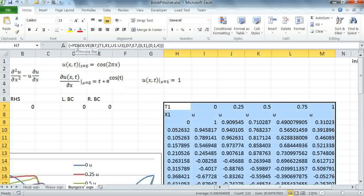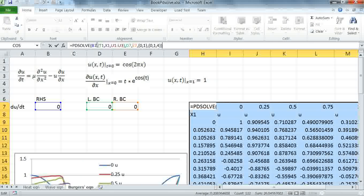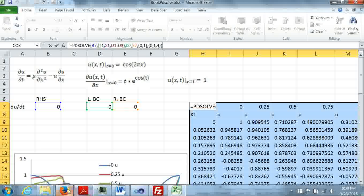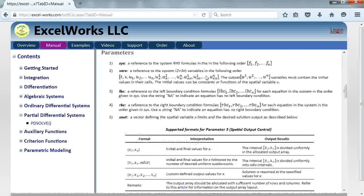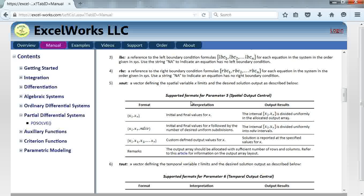I entered my PD solve formula here. My first argument is a reference to the right hand side formula in B7. The second argument is the reference to the system variable starting with t1, x1, and then u, ux, and uxx. Then followed by the left boundary condition, the right boundary condition, definition for the spatial domain zero to one, and definition for the time domain zero to one, and I'm here requesting four subdivisions. This format is explained in detail in the help page, and it's similar to the ordinary differential solvers.